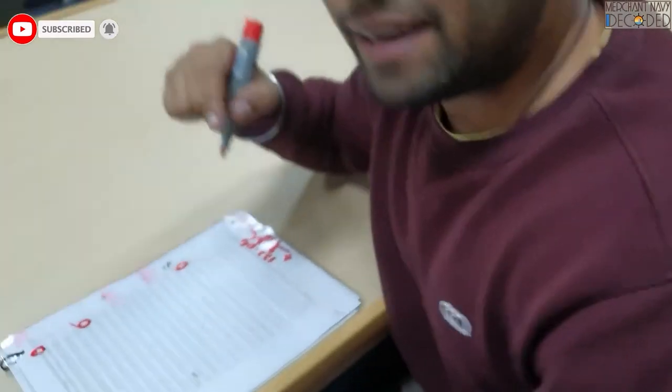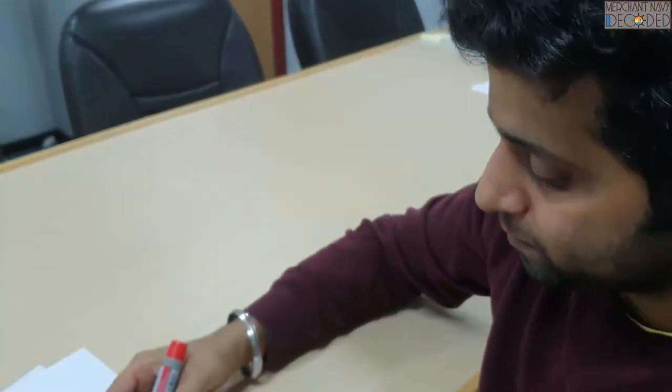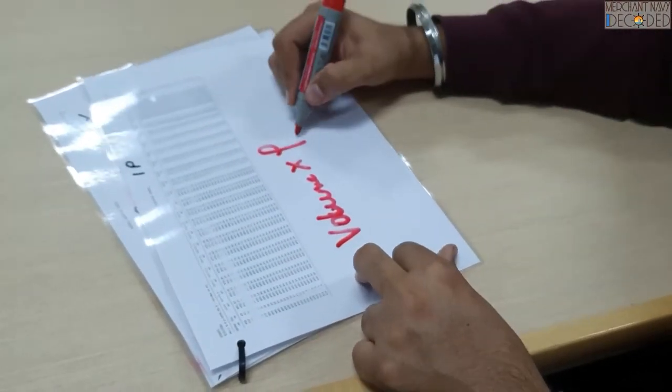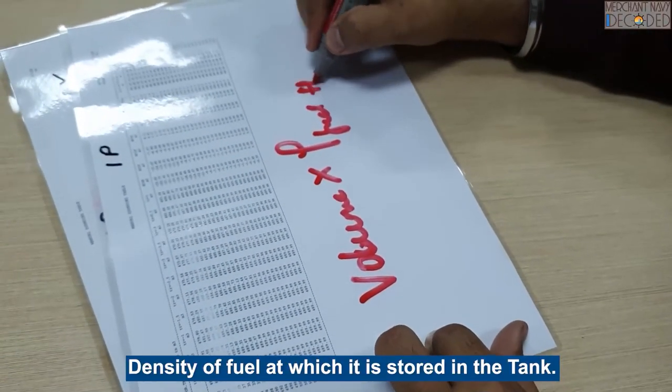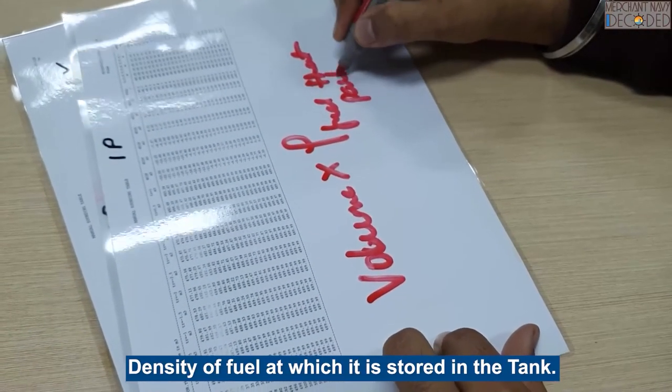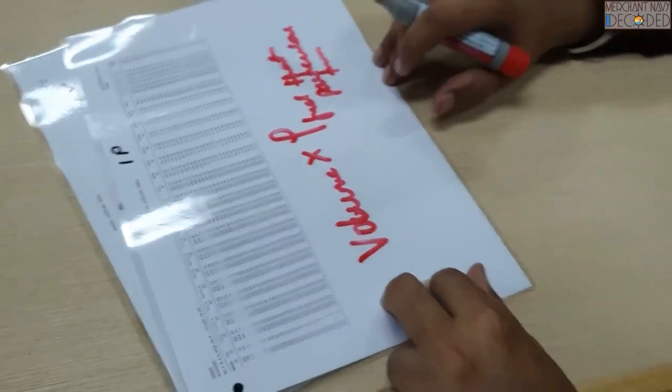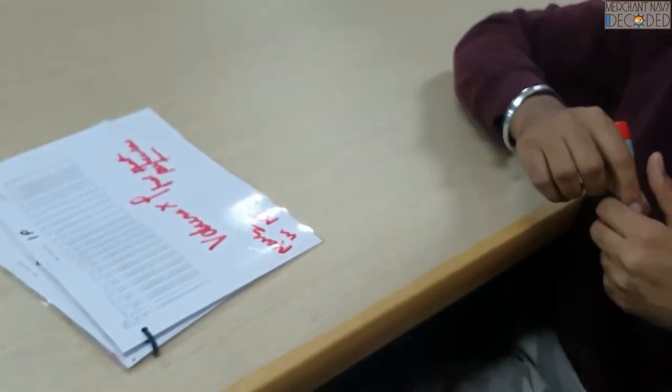And then when I multiply this volume, when I multiply this volume, multiplied by density, but what density? Of fuel, that particular time. It can be 30 degrees, 40 degrees. That is how I get mass in metric tons.